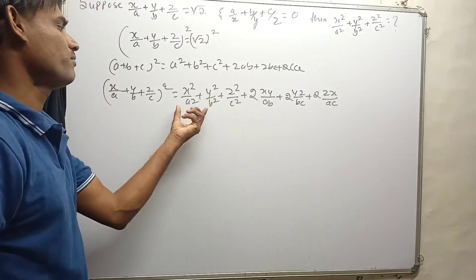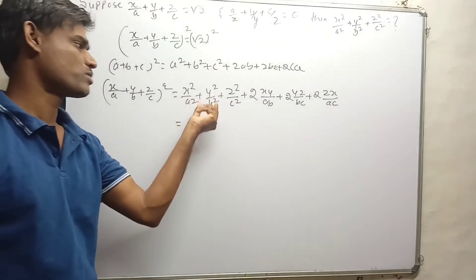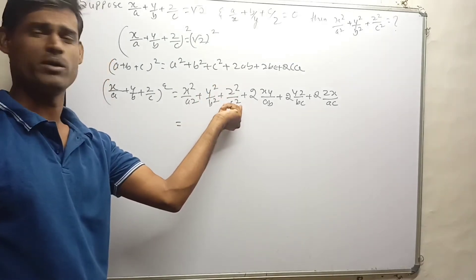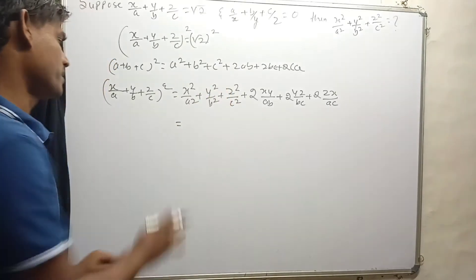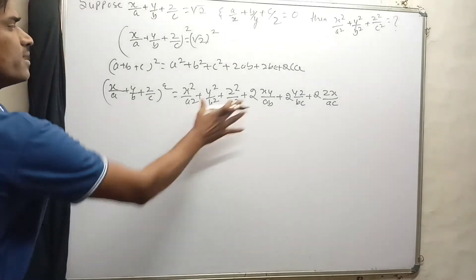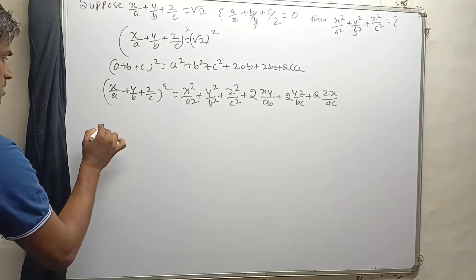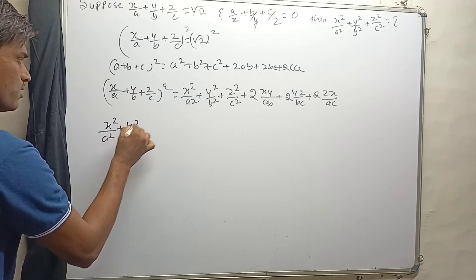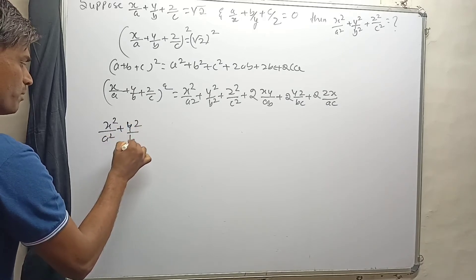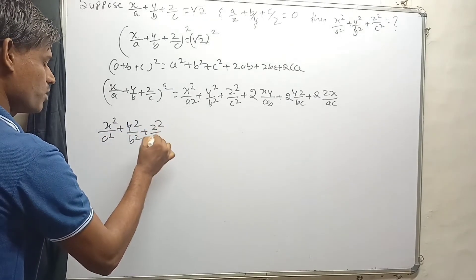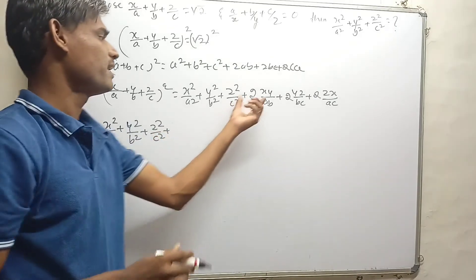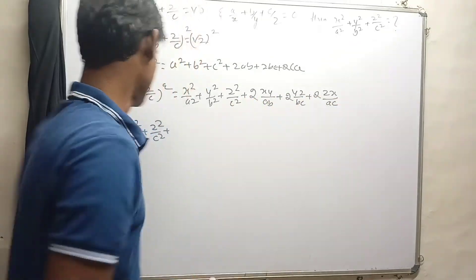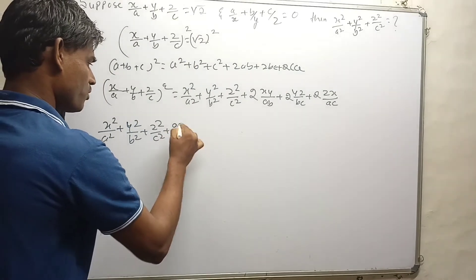Then we want the value of x²/a² + y²/b² + z²/c². So let's write this expression on the LHS. So here we have x²/a² + y²/b² + z²/c² plus 2 times the cross terms, and that equals 2. So by factoring out 2: